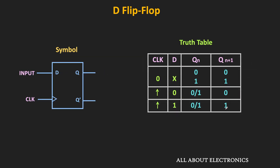This is the symbol of the positive edge-triggered D flip-flop, and this is its truth table. In short, from the truth table we can say that when there is no clock transition, the flip-flop will hold its current state. And at the clock transition, the next state of the flip-flop will be the same as the input.